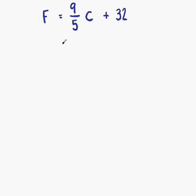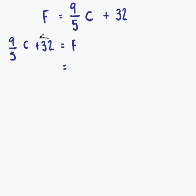The best way to start is simply by flipping the sides. If F equals 9 fifths C plus 32, then 9 fifths C plus 32 is equal to F. So now we have C on the correct side. The easiest thing to do next is to move our plus 32, giving us 9 fifths C on the left-hand side and F minus 32 on the right-hand side.